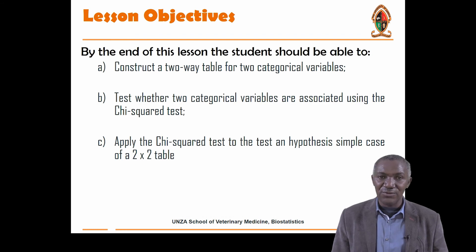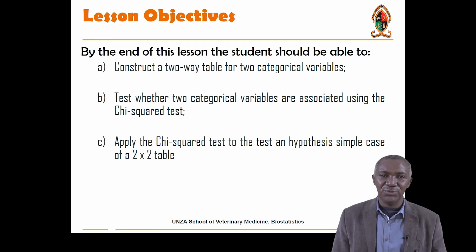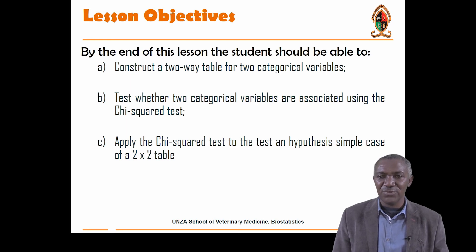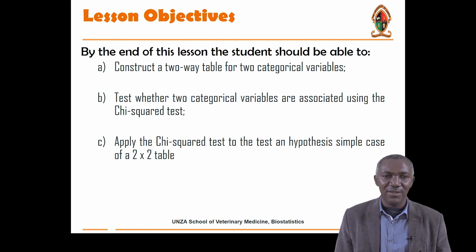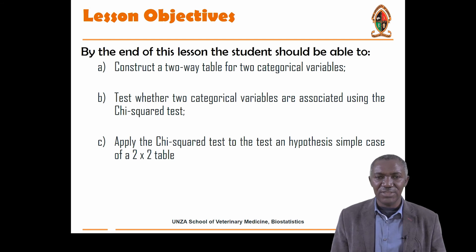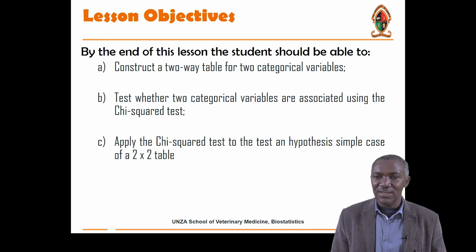The lesson objectives for today: we want you, at the end of this lecture, to be able to construct a two-by-two table. We'll also be able to test whether two categorical variables are associated with each other using the Chi-square test, and see how to apply it in testing hypotheses in the case of a two-by-two table.